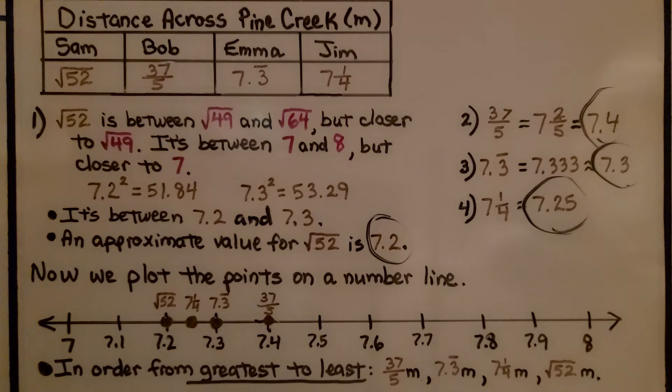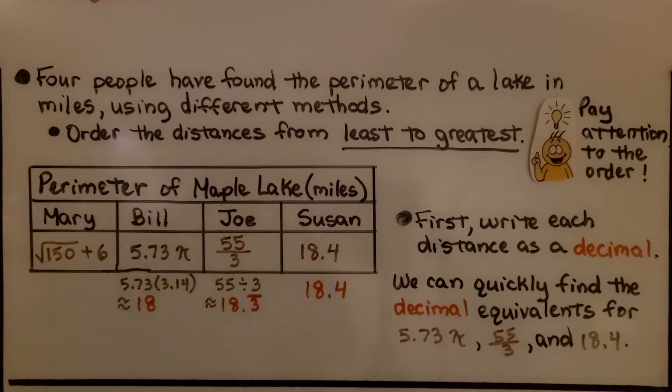So in order from greatest to least, we've got the greatest would be 37 fifths, then would be 7.3, then 7 and 1 fourth, and then the square root of 52 as the least. Let's try another one.